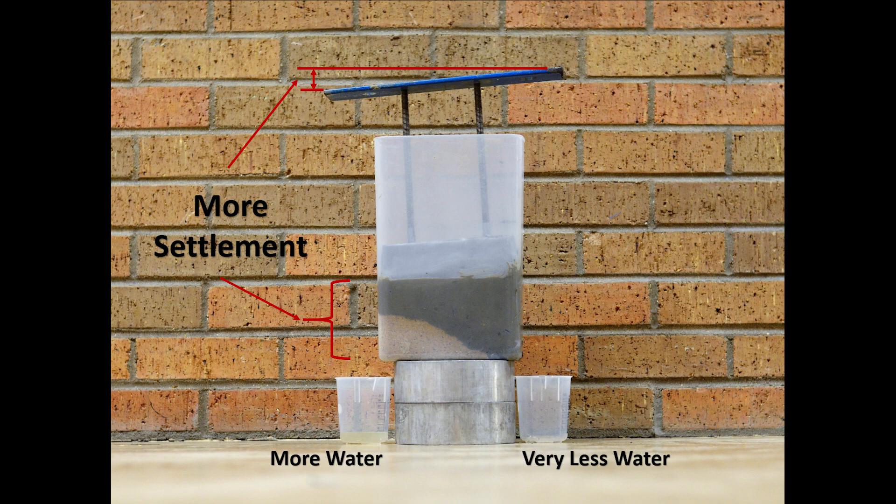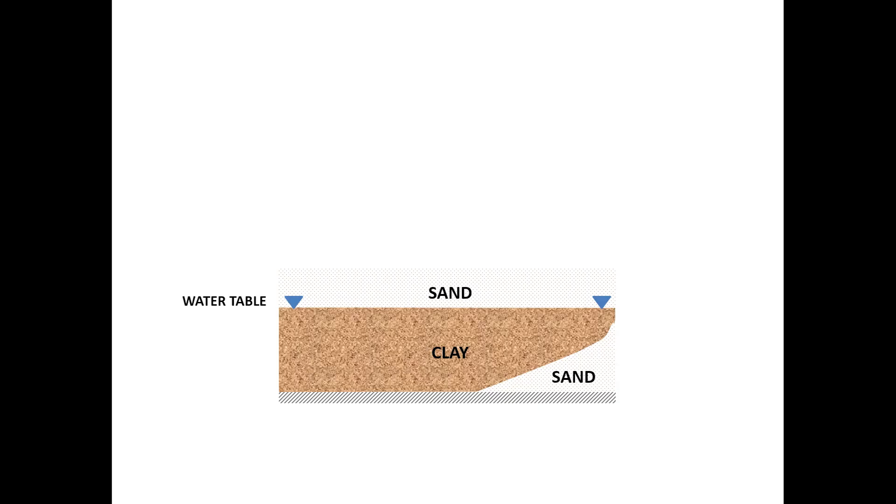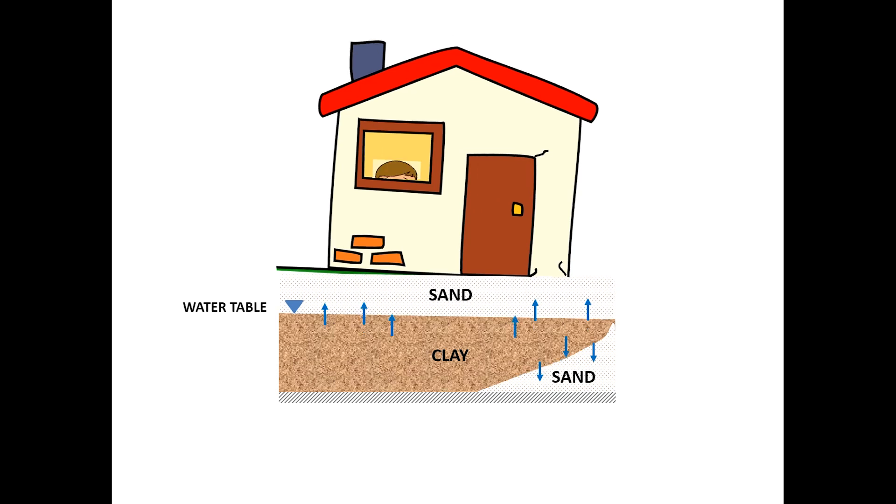It is seen that the half with the sand has settled a little bit more because the pore water has dissipated more from this half. This is known as differential settlement, which if not considered can lead to instability of structures such as tilting.